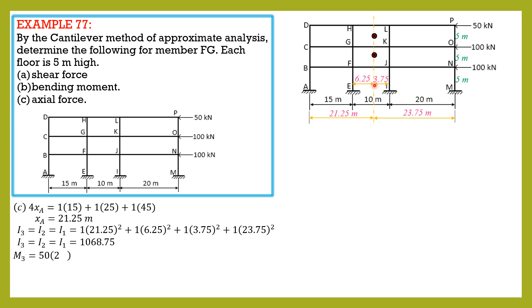Moment in level 3 is 50 times 2.5, so 125. Moment in level 2 is 50 times 7.5 (5 plus 2.5) plus 100 times 2.5. So M2 is 625 kilonewton meters.